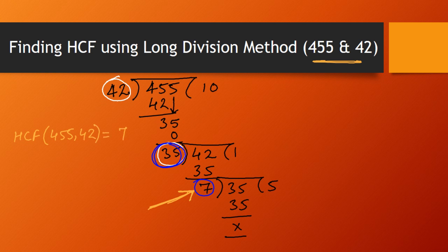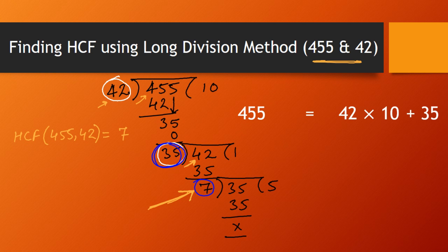Let me express the same long division in terms of Euclid's Division Lemma. If I express these two numbers in the form of A = BQ + R, I will get 455 = 42 × 10 + 35. Now in the second case, 42 is the dividend and 35 is the divisor. So again applying A = BQ + R, I get 42 = 35 × 1 + 7.